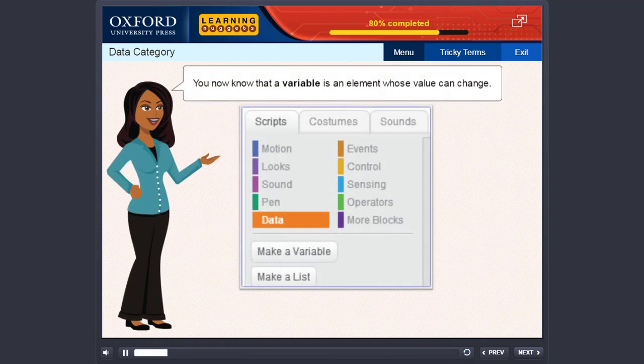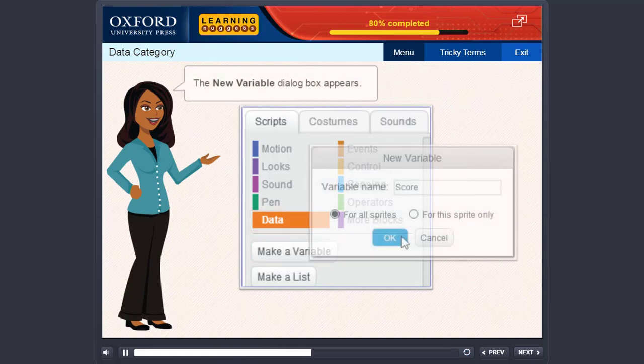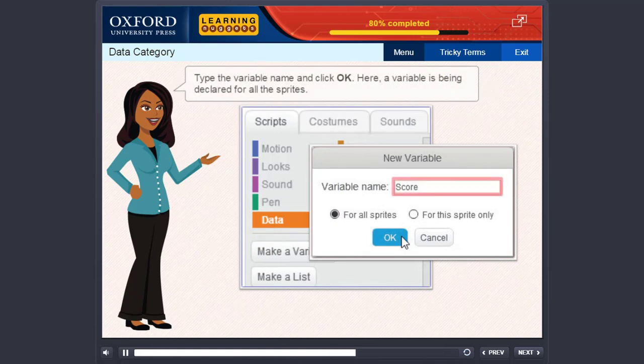You now know that a variable is an element whose value can change. To create a variable in Scratch, in the data category, click the Make a Variable button. The new variable dialog box appears. Type the variable name and click OK. Here, a variable is being declared for all the sprites.